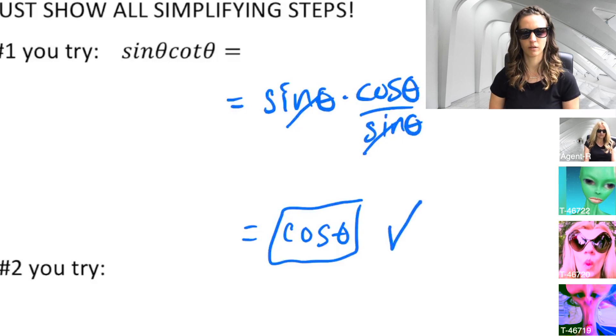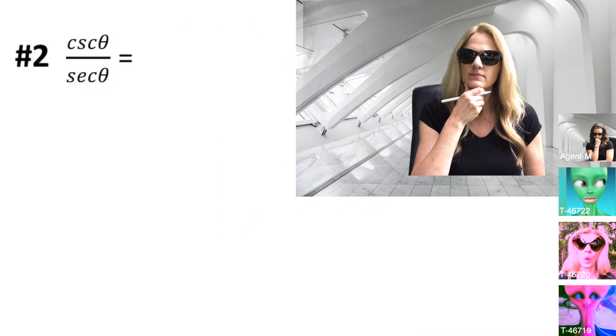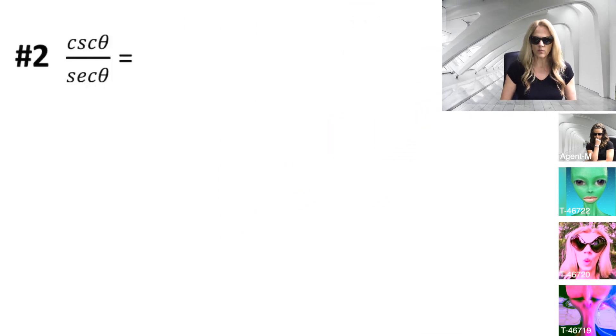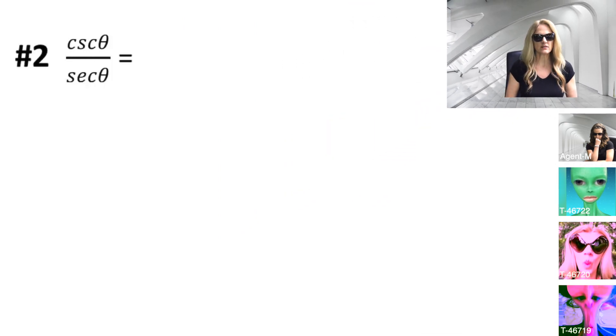Agent R, please take us through the next one. Thank you, Agent M. Superior effort. Next, we will go over number two. Number two is definitely in disguise, cosecant theta divided by secant theta. Well, we will do what Agent M suggested. Let's get everything in terms of sine or cosine.